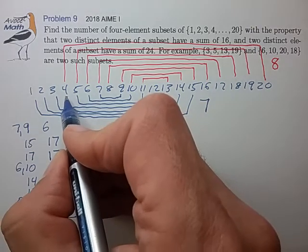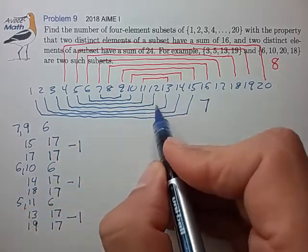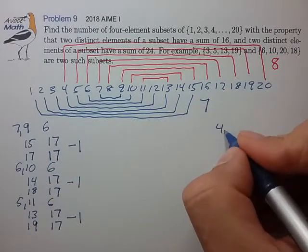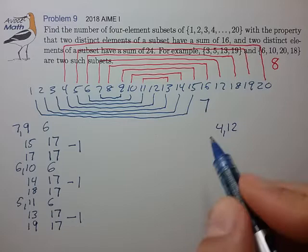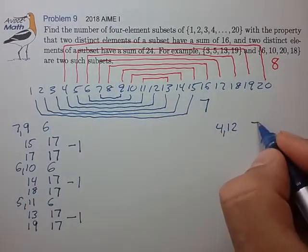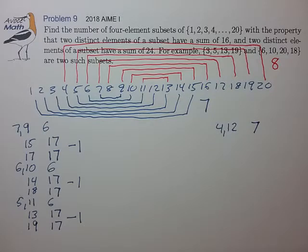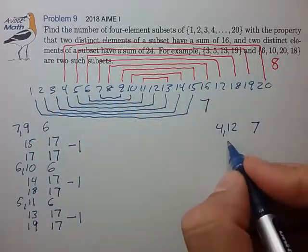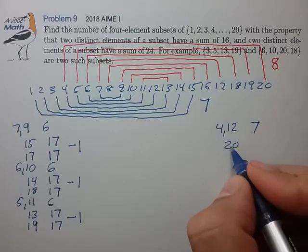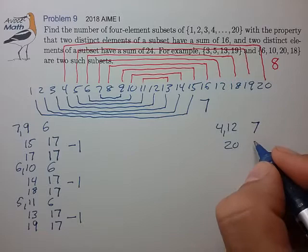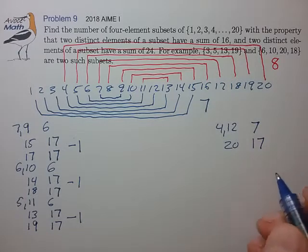Okay, the fourth blue pair is 4, 12. So that starts looking different. If it doesn't overlap, there's actually 7 ways that can occur, 7 of the red pairs. If it does overlap, they can only overlap in one way. It would have to contain the 20. If it contains the 20, the 4, and the 12, the other element could take on any of the 17 other values.